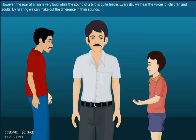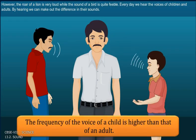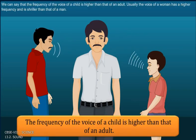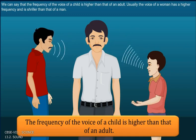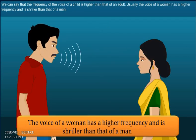Every day, we hear the voices of children and adults. By hearing, we can make out the difference in their sound. We can say that the frequency of the voice of a child is higher than that of an adult. Usually, the voice of a woman has a higher frequency and is shriller than that of a man.